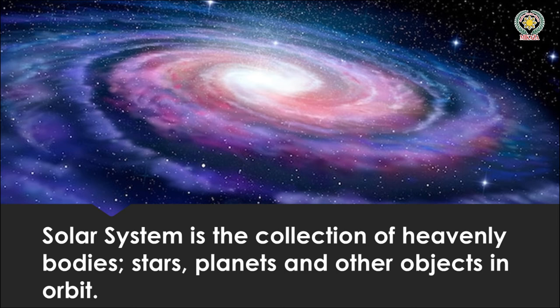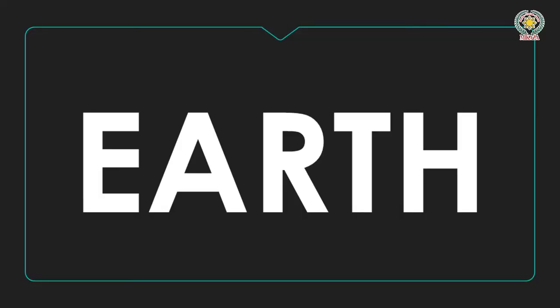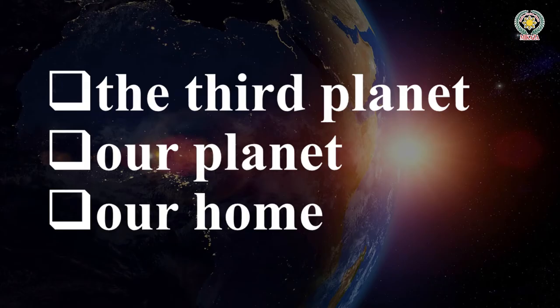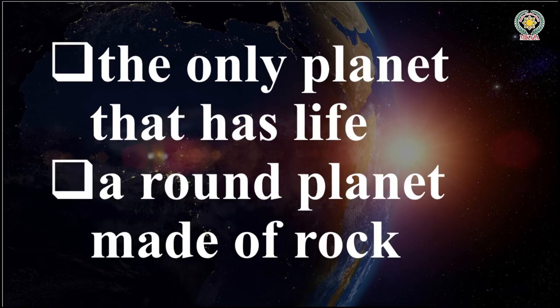One of the heavenly bodies we have are the planets, and the earth is one of them. Earth is the third planet and the only planet that has life — it is our home. We have to take care of our earth. The characteristics of the earth: it is a round planet made up of rock.